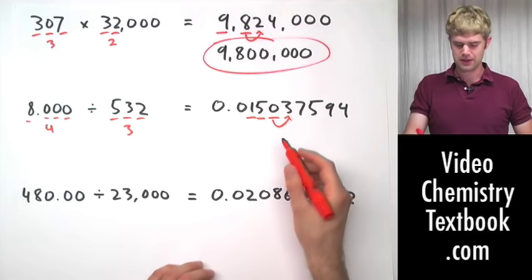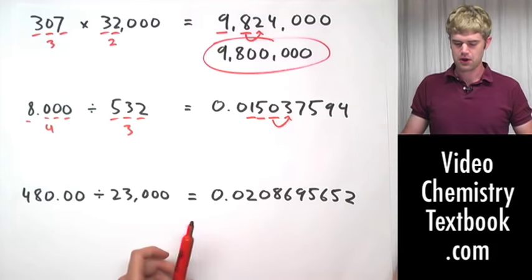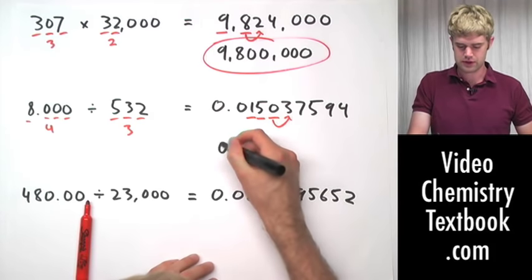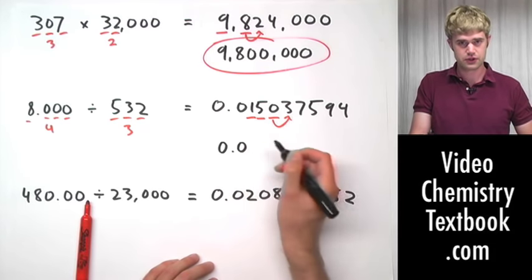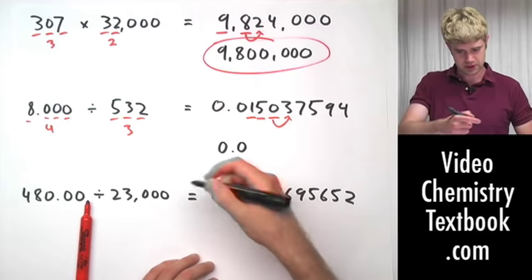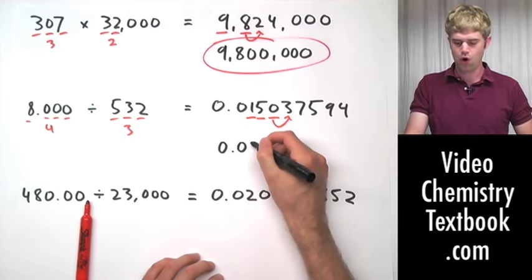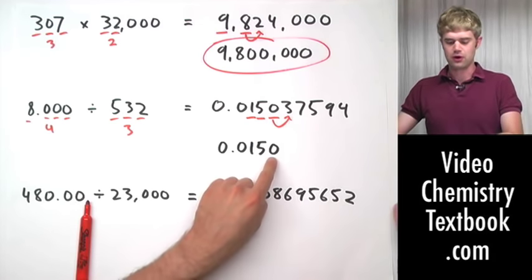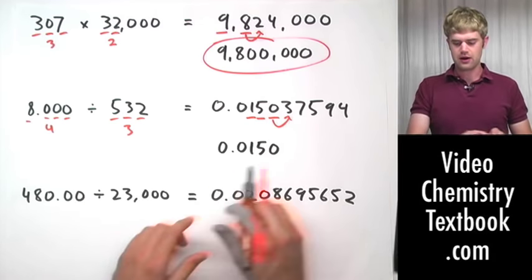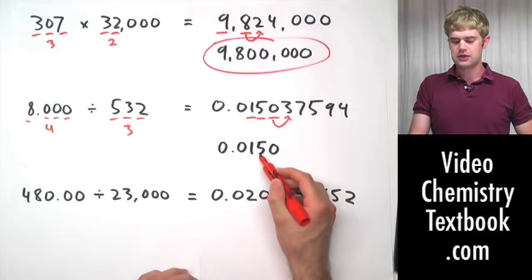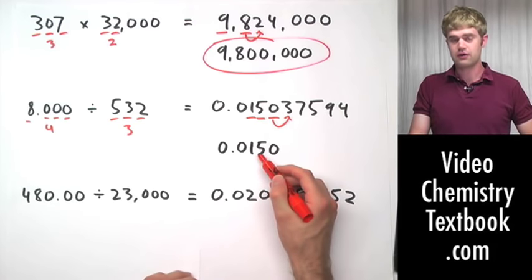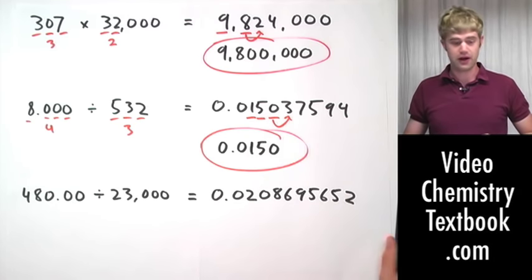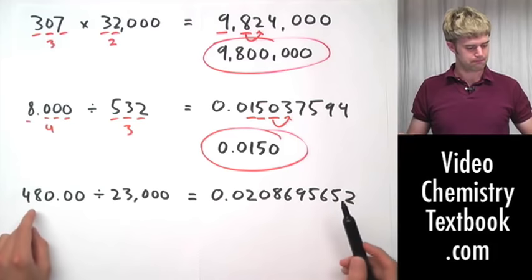...keep this and look to the right to see whether we should round it up or down. It's a zero so we keep it the same. So we're going to turn this to 0.0 — neither of those are significant because they're to the left — one, five, zero. And the zero is significant because it's to the right of non-zero numbers and there's a decimal place in the number. So that is our final answer there.